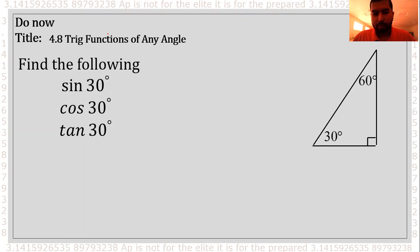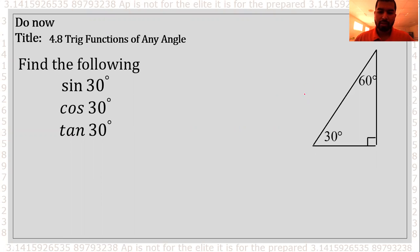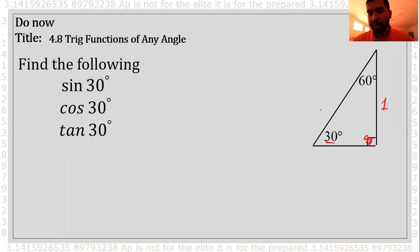So normally I will not give you the triangle, but since we just learned it yesterday, I'm gonna go ahead and provide it for you. So here we have it on the right. For 30 degrees, the length associated with that is 1. For this 90 degrees, the length is 2. And for 60 degrees, we got a length of square root of 3.